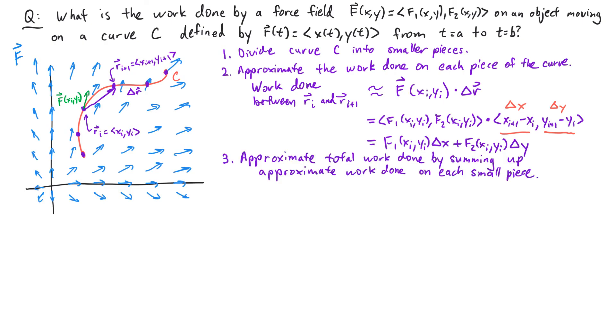Next, we're going to approximate the total amount of work done by adding up the approximate work done on each of these small pieces. So the total amount of work done is approximately the sum of f1 at xi yi times delta x plus f2 at xi yi times delta y. And this sum I can break apart into two sums: f1 xi yi delta x plus the sum f2 xi yi delta y.